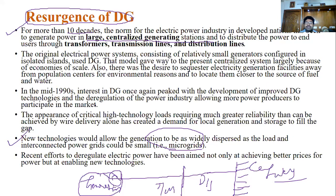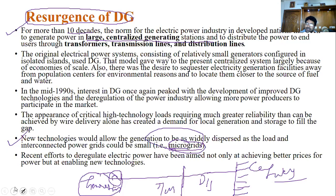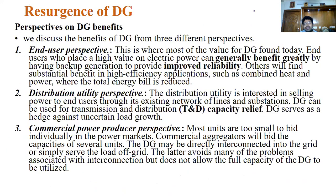When DGs are located near the load locations, we call it distributed generation or embedded generation. When these DGs are able to connect to the grid, we call it a microgrid. 'Micro' means very small — compared to the grid size of megawatts or gigawatts, the DG size is very small. That's why we call it a microgrid. Technology is changing, allowing us to connect DGs to the grid. There are three main perspectives on DG: the end user perspective, the distribution company perspective, and the commercial perspective.